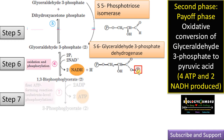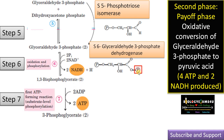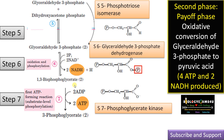Step 7: 1,3-bisphosphoglycerate is converted to 3-phosphoglycerate. The phosphate is removed, therefore ATP is formed. The phosphate is received from the high-energy 1,3-bisphosphoglycerate. This is called substrate-level phosphorylation, as the phosphate is donated by the substrate. The enzyme involved is phosphoglycerate kinase. Whenever ATP is formed or removed, the enzyme is a kinase. This is the first ATP formed, and since glyceraldehyde-3-phosphate runs twice, we get 2 ATP total.